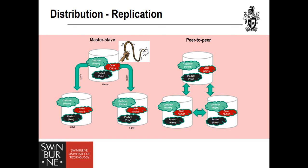In a master-slave replication setup, the master receives all updates and propagates them to slaves. Slaves are read-only, which is particularly useful when there are many reads and relatively few updates. This is also a resilient setup — many databases can appoint a new master automatically when the master fails, meaning a slave serves as a hot backup that is always current. When there are many write operations, a peer-to-peer setup may be useful. Each node can receive write operations and the replication process copies data to other peers. The only difficulty is consistency — if the same data is changed on two replicas, a conflict resolution mechanism is needed.